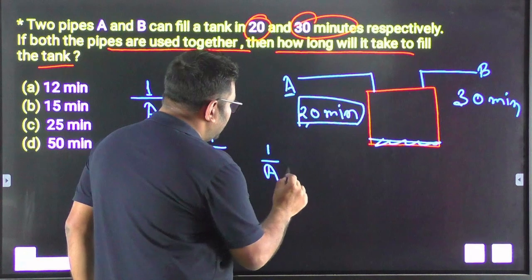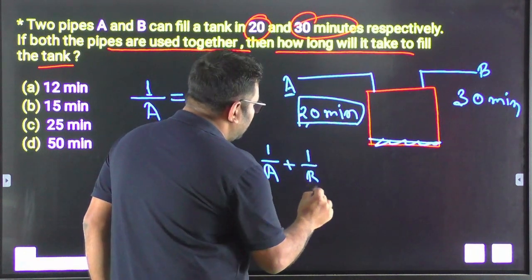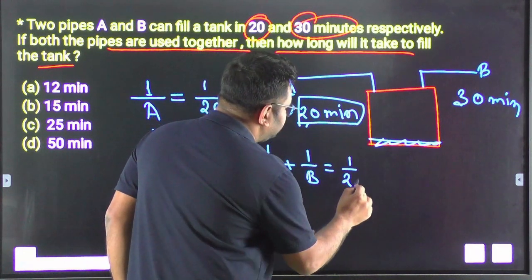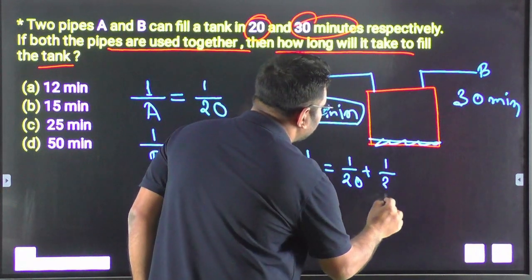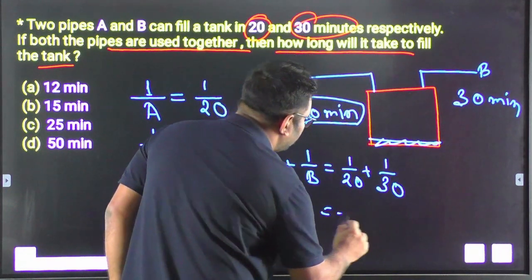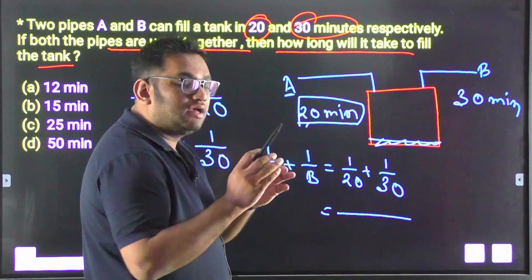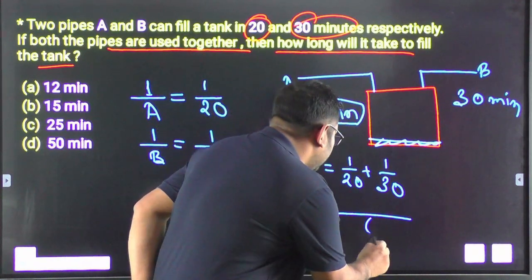1 by A plus 1 by B is equal to 1 by 20 plus 1 by 30. Finding a common denominator of 60, we get 3 plus 2 over 60, which equals 5 over 60, simplifying to 1 by 12.